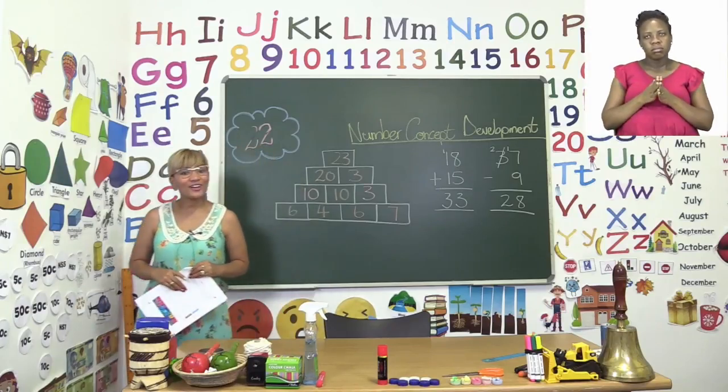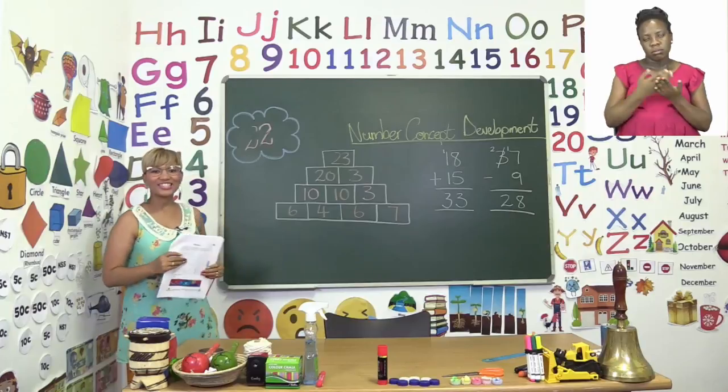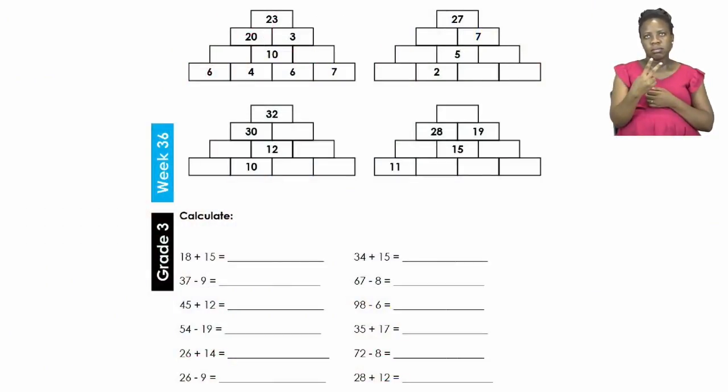Now let's start this part of our lesson on page 22. Now here we are doing number concept development. It says that you have to fill in the missing numbers. Each row should be equal to the number at the top.